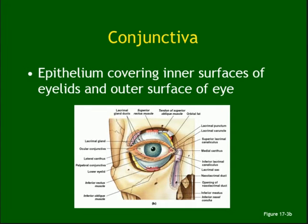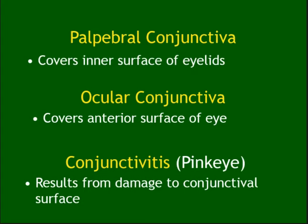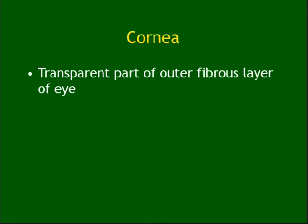The conjunctiva covers the outside of the sclera; there is palpebral and ocular conjunctiva with a fornix pouch in between. Anytime you see a clinical condition it is important. Conjunctivitis is inflammation of the conjunctiva — it becomes red or pink, which is why it's known as pink eye.